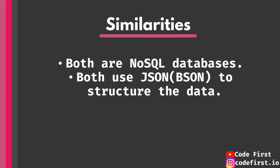Both of them use JSON — or BSON in the case of MongoDB — to structure the data. JSON, as you probably know, is JavaScript Object Notation, a data interchange format very widely used on the web to exchange data. In the case of MongoDB, they use BSON, which is essentially just binary JSON — an extended version of JSON. These are the similarities, and that's why there is a huge debate around which one to use.